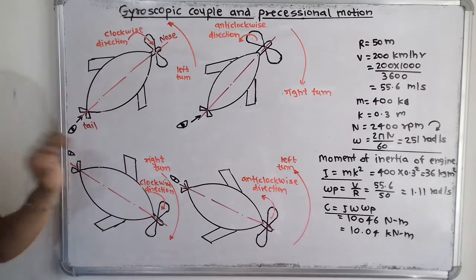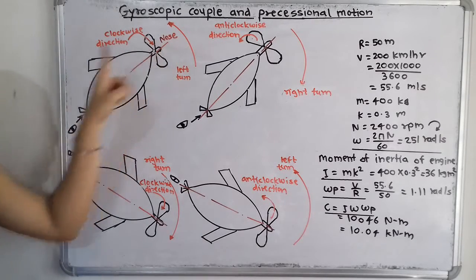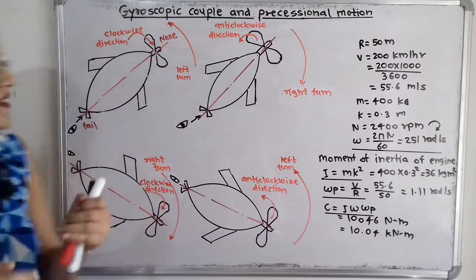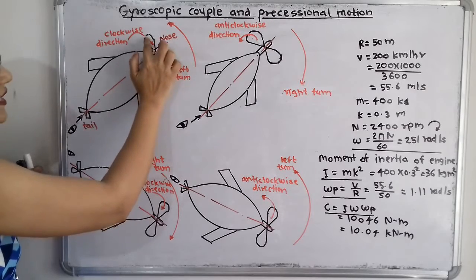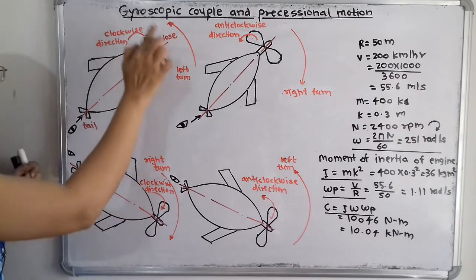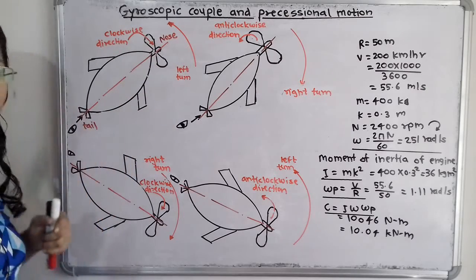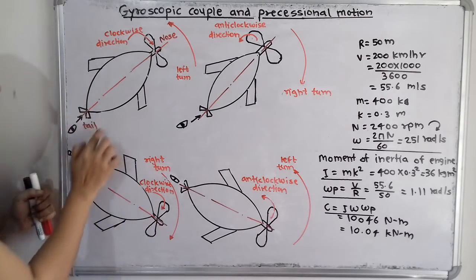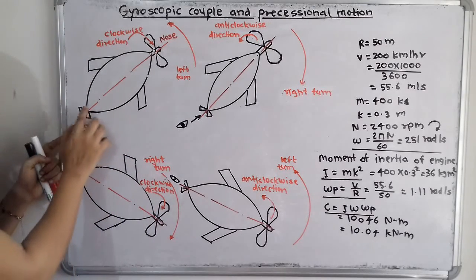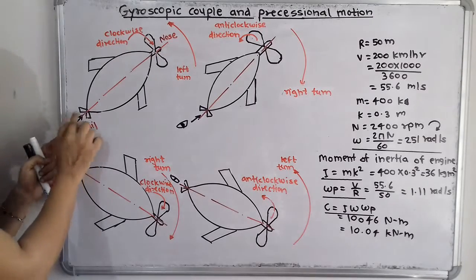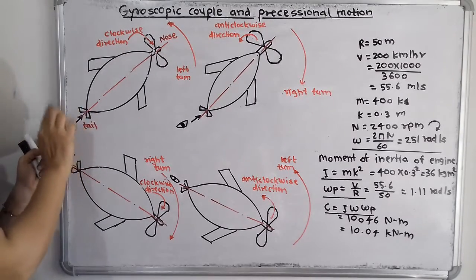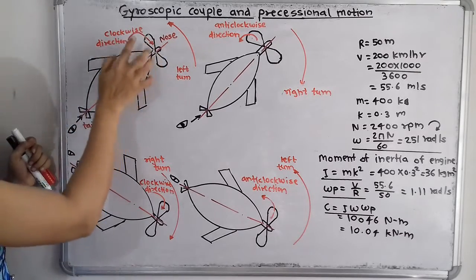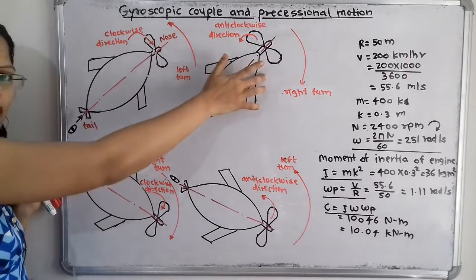Now if we observe this diagram, this is the front end of the aeroplane and this is the rear end or back end. At this front end, here is the nose and the propeller, which is constantly rotating about this axis drawn in the form of dash and dot. This is the tail end, and from this back end the observer is observing.